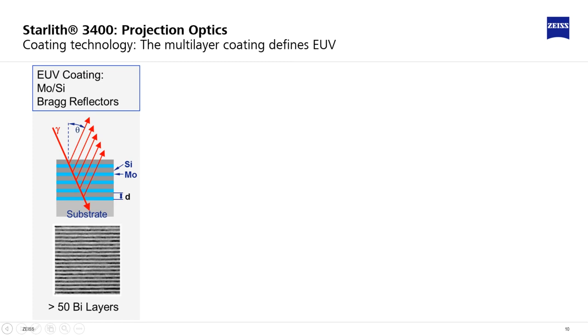Therefore, the coatings are the only elements in the whole structure of the scanner that are optically active. A typical EUV coating consists of around 50 bi-layers of molybdenum and silicon.